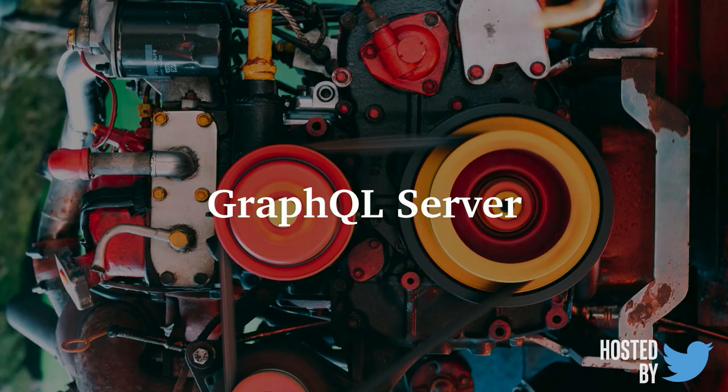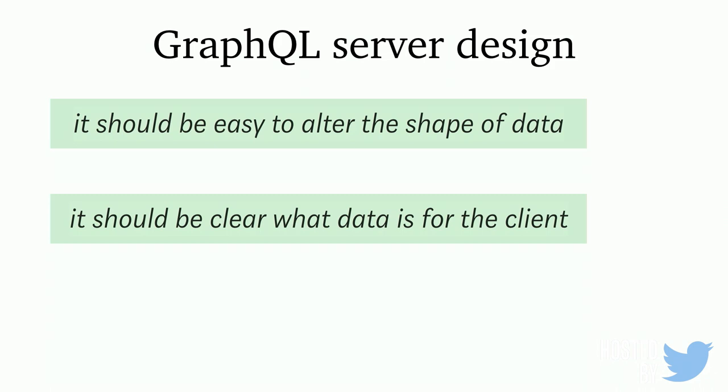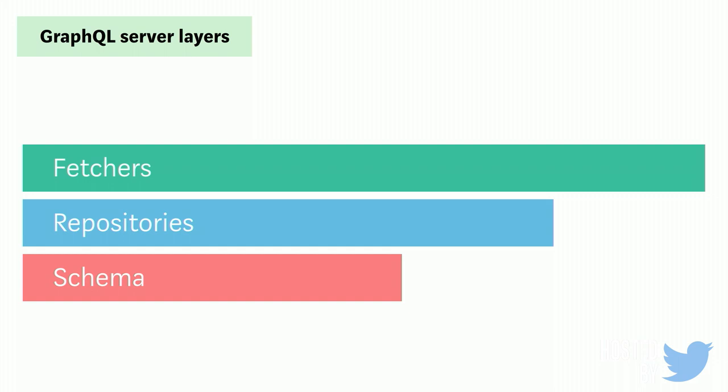A lot of this migration wouldn't have been possible without GraphQL. So let's talk about how the structure of our GraphQL server actually helped our migration. When designing our GraphQL server, we wanted three main things: a clear separation of concerns, while dealing with legacy data. One: it should be easy to alter the shape of the data — legacy data coming in shouldn't affect what the client wants. Two: it should be clear what data is for the client versus raw data. And three: it should be easy to add new data sources without confusion about where the data is coming from.